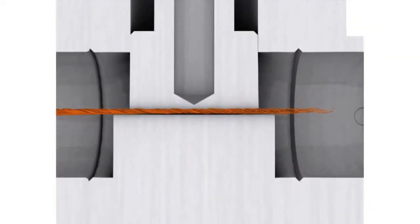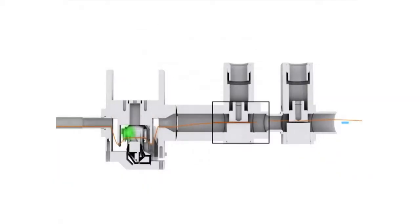The preparation unit prepares the yarn end with open, untwisted fibers.